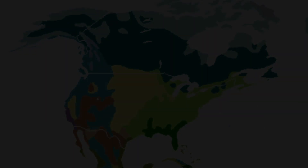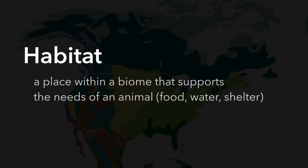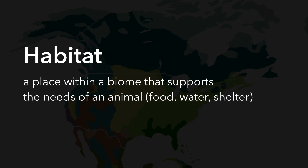Within those biomes are several different types of habitats. A habitat is a place within a biome that supports the needs of an animal. And the basic needs for every animal is food, water, and shelter.